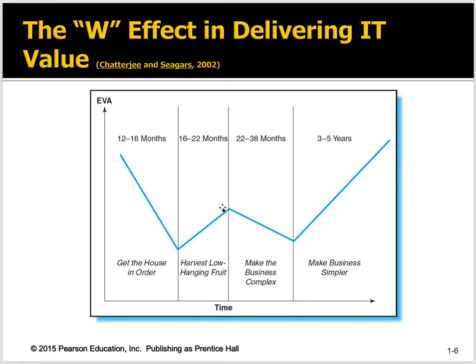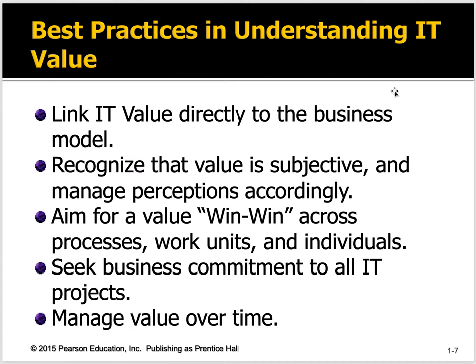That takes you from one to basically two years. In the third year, you're trying to make this thing fly — making the business more complex, challenging your people more. Then in years three to five, you make the business simpler and your economic value added increases dramatically. Getting your business processes in place is the key part here. After that it takes off, when you can start doing exciting things like shared service organizations, which is a topic we'll discuss in this class.